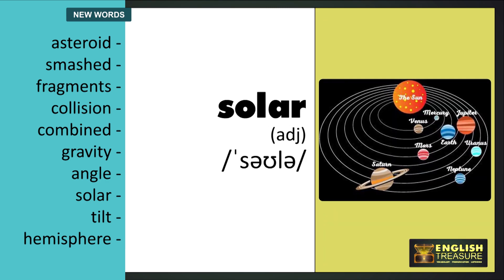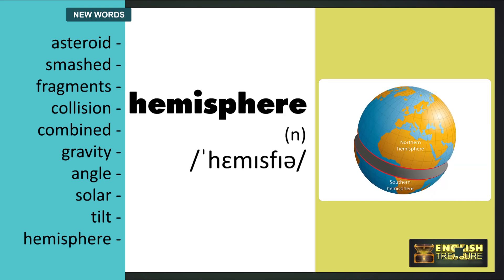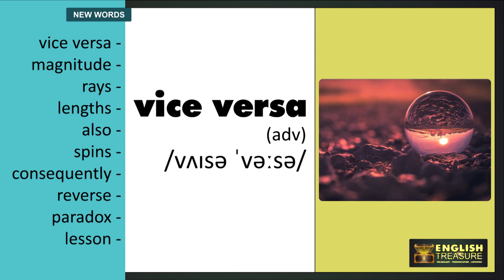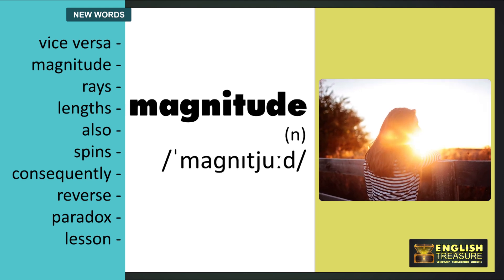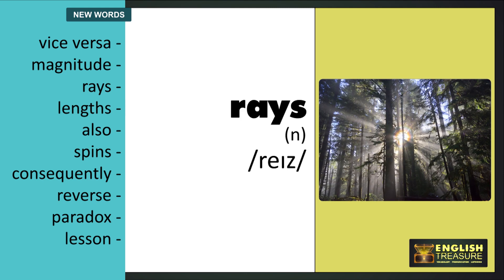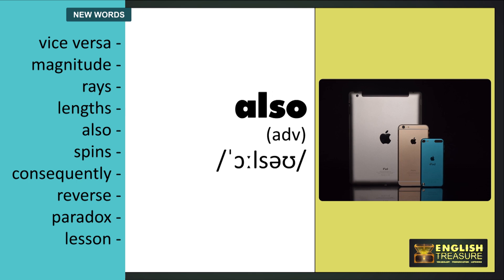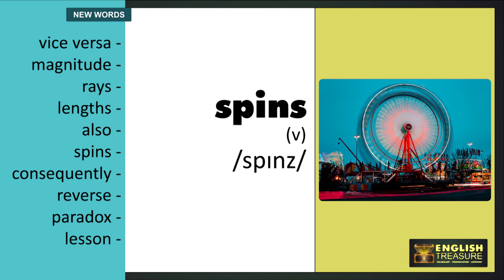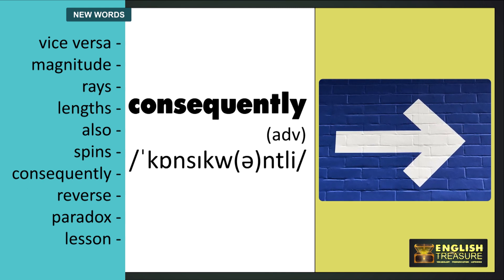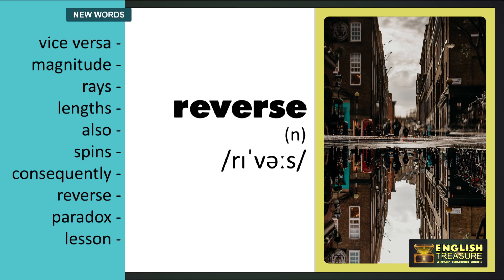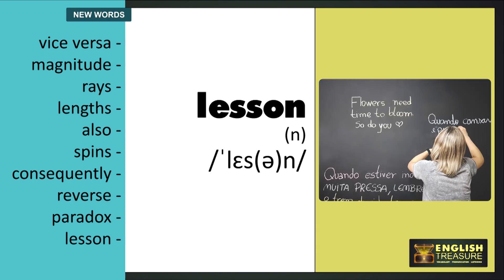Solar. Tilt. Hemisphere. Vice-versa. Magnitude. Rays. Lengths. Also. Spins. Consequently. Reverse. Paradox. Lesson.